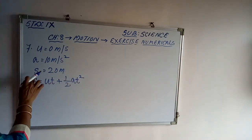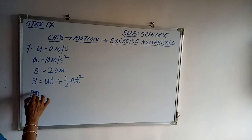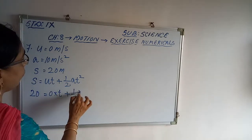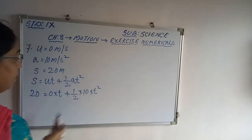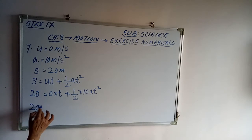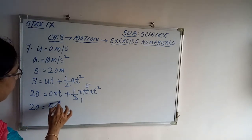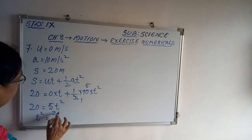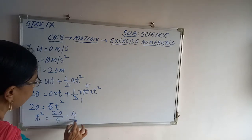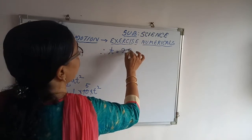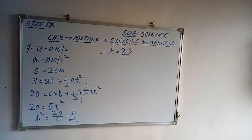From 5t² = 20, we get t² = 20/5 = 4. Therefore, time t = 2 seconds.